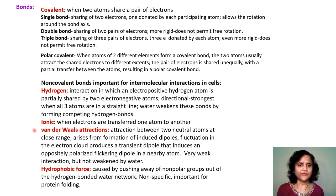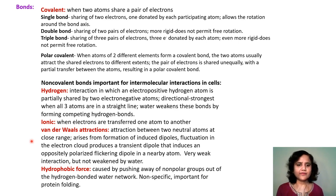Ionic bonds are formed when electrons are transferred from one atom to another, so that each ends up with a charge. Van der Waals interactions are weak interactions or attractions between two neutral atoms at close range, and they arise from the formation of induced transient dipoles — a fluctuation in the electron cloud produces a transient dipole that can induce an oppositely polarized dipole in a nearby atom. These are very weak interactions, but they are not weakened by water.